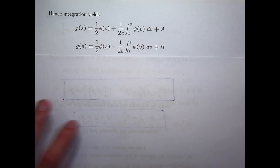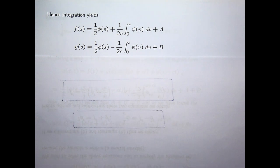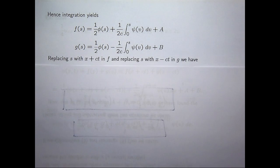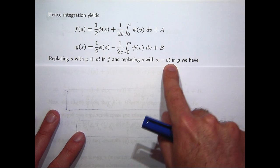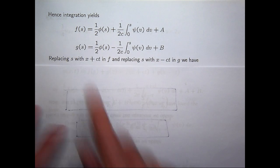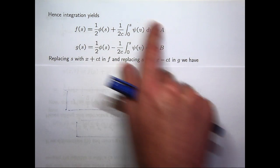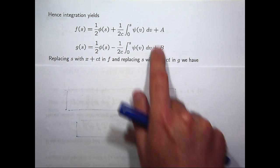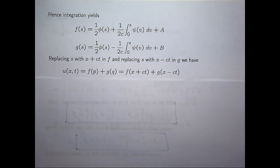So, integrating those two equations, you'll get something like this, where the big A and the big B are constants of integration. Now, just make sure you've got an x minus ct here. I think in your notes you had a c minus ct. So, let's replace s with x plus ct in here and do a similar replacement with x minus ct in the g form. Then we have the following.